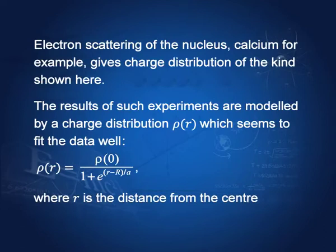By interacting only with protons, electrons can trace the charge distribution of the nucleus. There are neutrons and protons in the nucleus, but these electrons ignore the neutrons — they interact directly with protons. Therefore they give us information about the distribution of charge inside the nucleus. From that charge distribution, we find the radius of the nucleus. Electron scattering of calcium, for example, gives a charge distribution of the kind shown here.